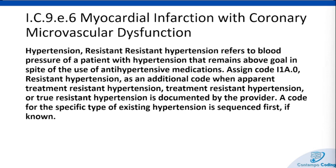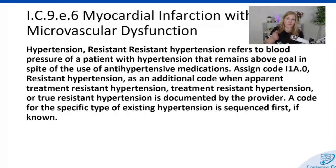Chapter 9 has been revised in the guidelines. There is now a new code for resistant hypertension, which is when a patient's blood pressure stays high even after they're taking medications. If you see this condition, you'll use the code I1A.0. But remember, this is an extra code — we always have to have the specific type of the existing hypertension first, and then use I1A.0 for the resistant hypertension.